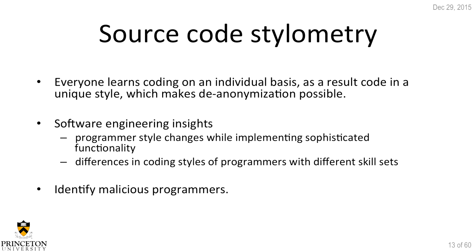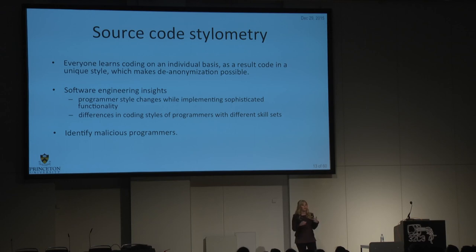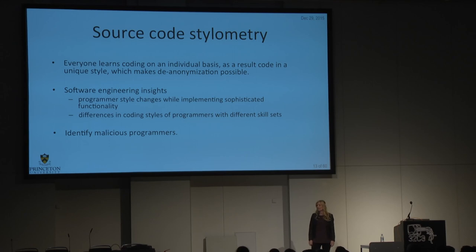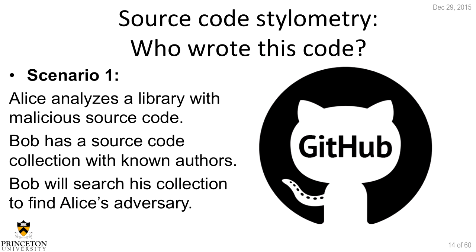We wanted to investigate if it's really possible — do we leave fingerprints in source code that might make us identifiable? We might also gain software engineering insights: how does coding style change over years, what are the differences between more and less advanced programmers, does your coding style change when implementing more sophisticated functionality? The main motivating goal would be to identify malicious programmers who might be contributing malicious code or backdoors to open source software.